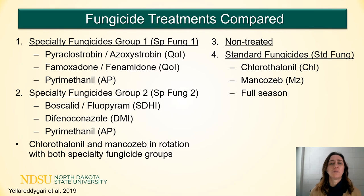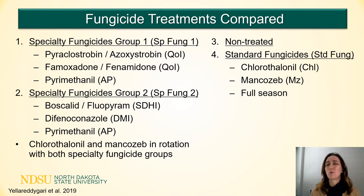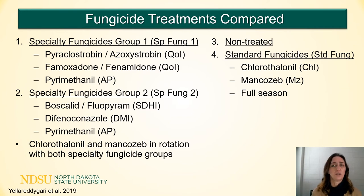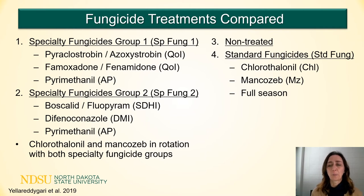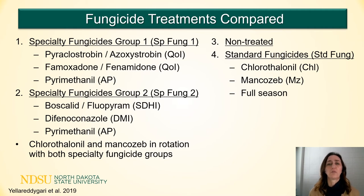We have four groups of treatments compared here. Two groups of specialty fungicides — one mainly using QoIs, the second using SDHIs and DMIs. The specialty fungicides were applied either two or three times, tank-mixed and alternated with chlorothalonil and mancozeb. The trials were conducted under situations where there are still sensitive pathogen populations, and the choices of fungicides under those specific categories were fluid across the 13 years the trials were conducted. These were compared with non-treated and treatments of just standard fungicides of chlorothalonil or mancozeb applied for all 10 applications across the growing season.